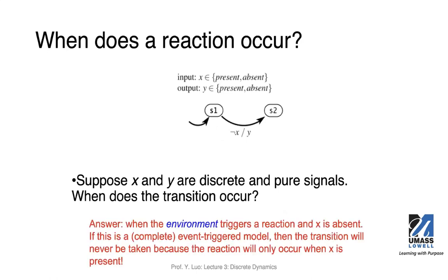This is a little tricky to understand just by looking at the finite state machine. The way we designed it, we use the event-triggered model. In this example, the condition is that X is absent. But because the input signal is absent, the reaction will not be triggered and will not occur, so the predicate will not be evaluated and the transition will not be taken.